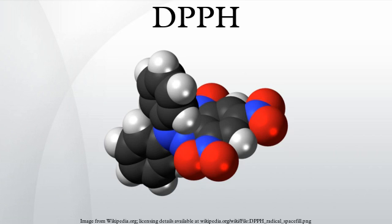DPPH has several crystalline forms which differ by lattice symmetry and melting point. The commercial powder is a mixture of phases which melts at 130 degrees Celsius. DPPH-I is orthorhombic, DPPH-II is amorphous, and DPPH-III is triclinic.